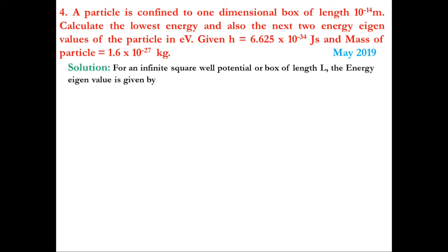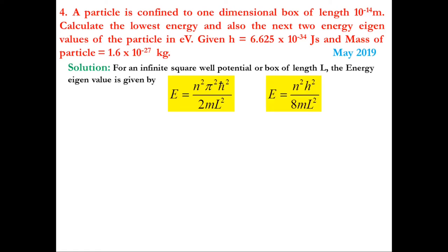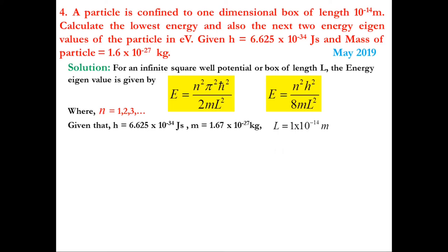Using the energy eigenvalue formula En = n²h²/(8mL²), with h = 6.625×10⁻³⁴ J·s, m = 1.67×10⁻²⁷ kg, and L = 1×10⁻¹⁴ m, the lowest energy corresponds to n = 1. E₁ = h²/(8mL²) = 3.2862×10⁻¹³ J.